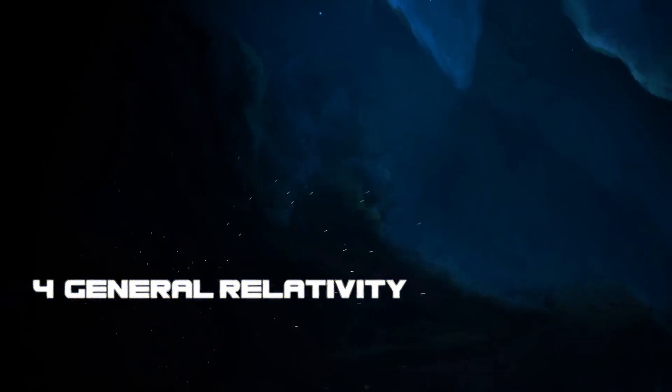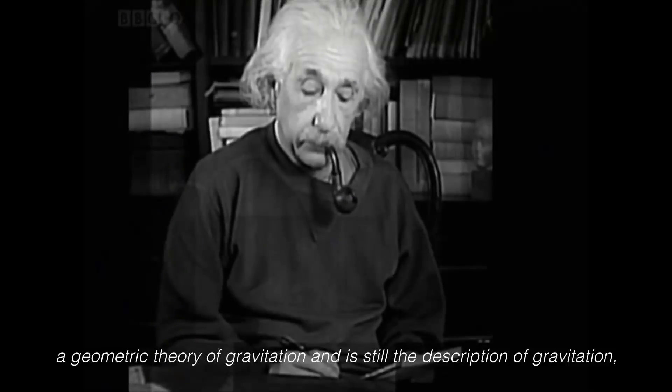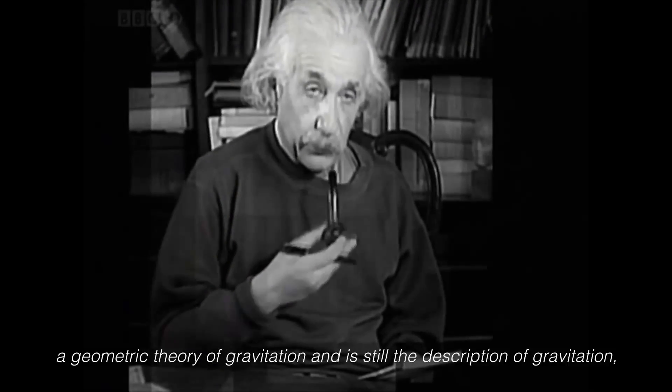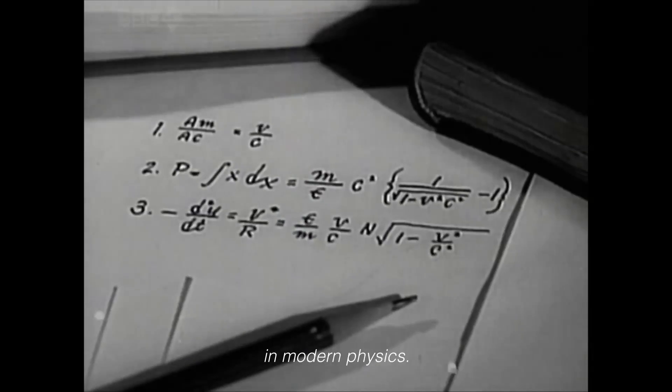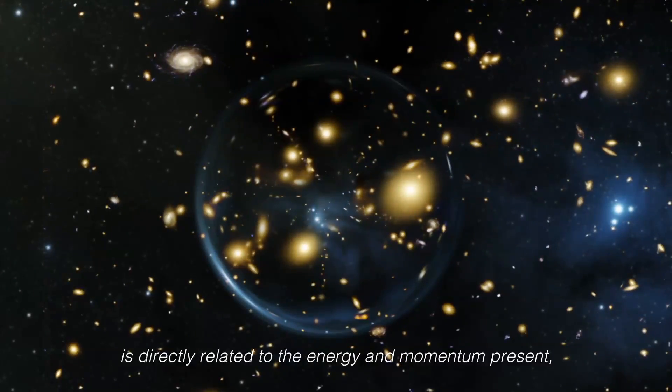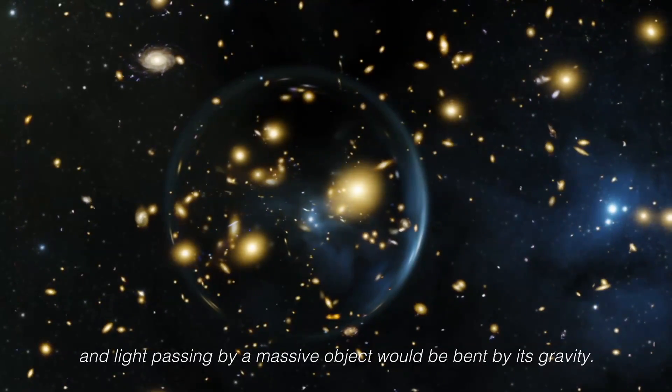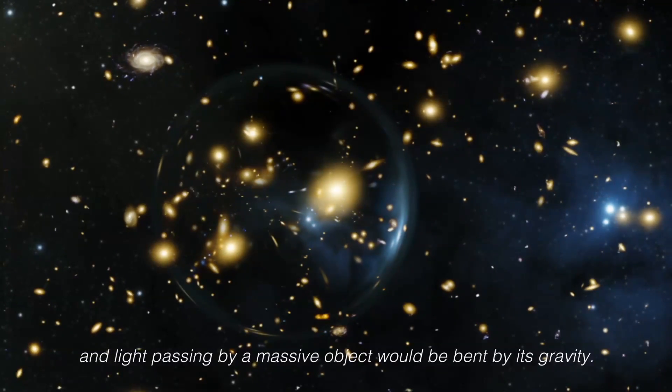Number 4: General Relativity. In 1915, Albert Einstein published The Theory of General Relativity, a geometric theory of gravitation, and is still the description of gravitation in modern physics. It states that curvature of spacetime is directly related to the energy and momentum present, and light passing by a massive object would be bent by its gravity.